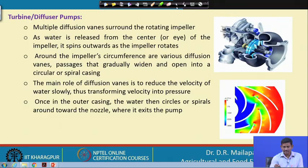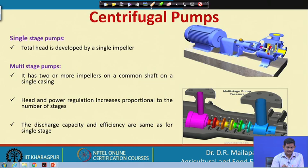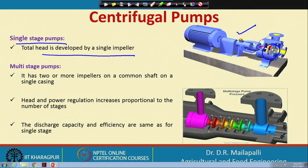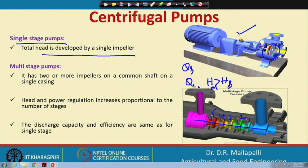In single stage pumps, the total head is derived by a single impeller. In multi-stage pumps, multiple impellers — for example, five — are installed on a single axis. The discharge is the same in both cases (Q_S = Q_M), but the head is significantly greater with multiple impellers. Head H_S for single stage is less than H_M for multi-stage.